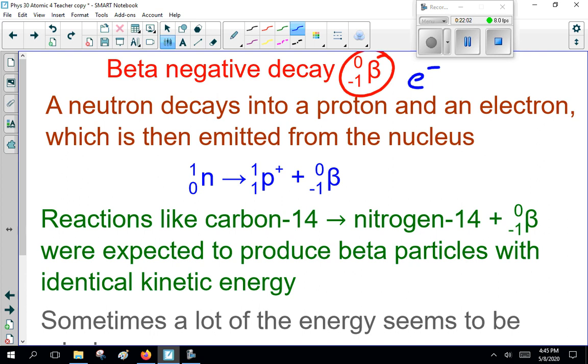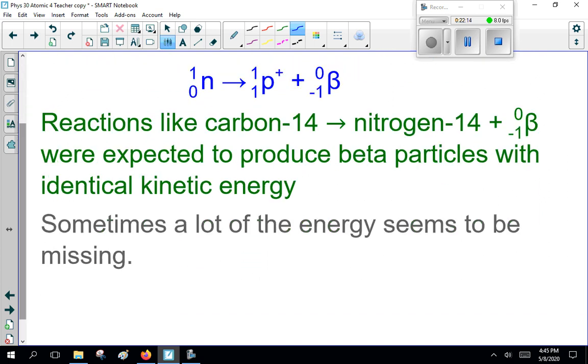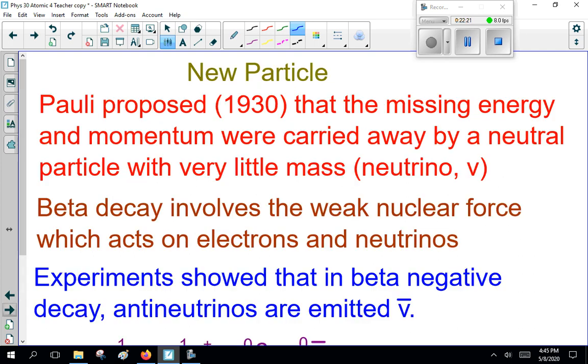Anyway, so reactions like carbon-14 forming nitrogen-14 and a beta negative particle, or electron, were expected to produce beta particles with identical kinetic energies. Now, sometimes a lot of this energy seems to be missing. So, they're missing energy here. They're missing mass. So, Pauli proposed in 1930 that the missing energy momentum were carried away by a neutral particle with very little mass, called the neutrino, V.